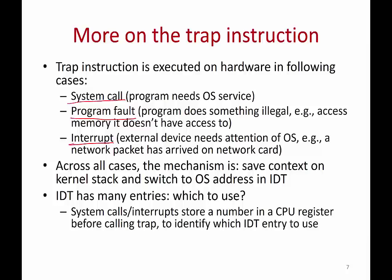The interrupt descriptor table has different operating system functions for each of these cases — for different system calls, for interrupts, and so on. All of these system calls and interrupts are assigned a number, and when a system call is made or an interrupt happens, this number is stored in some CPU register. Using this number, the hardware knows which interrupt descriptor table entry to use and how to update the program counter. In all of these cases, you go from user mode to kernel mode and jump into the operating system code.